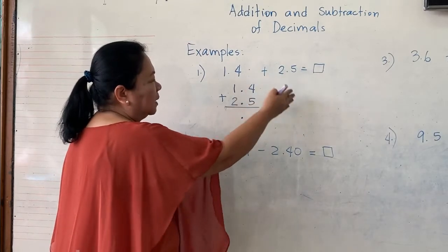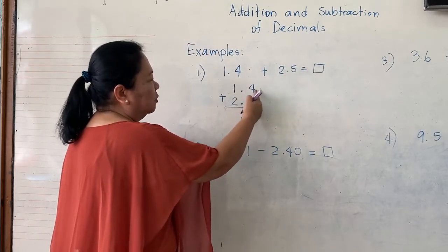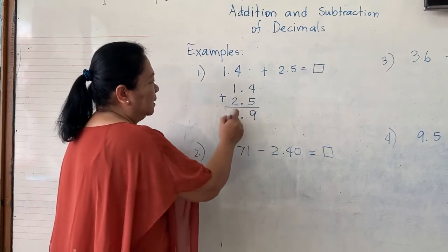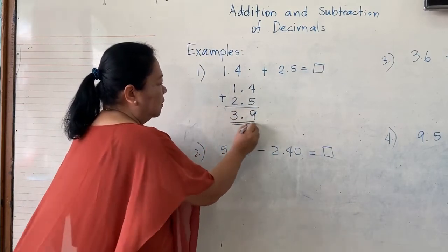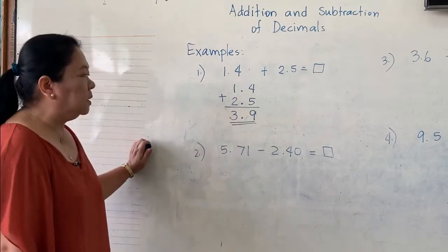4 plus 5 equals 9. 1 plus 2 equals 3. Therefore, the answer is 3.9.